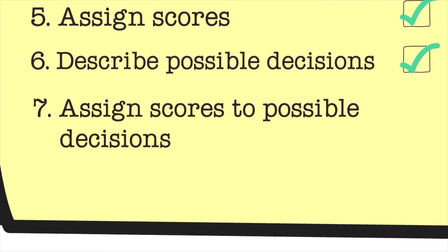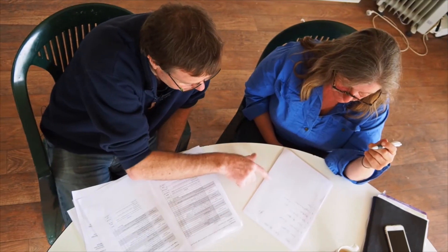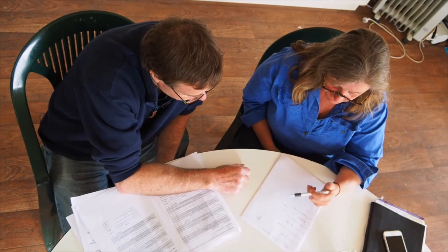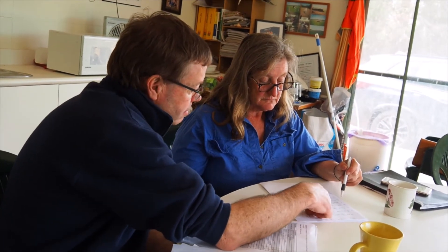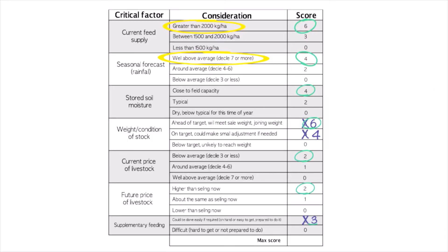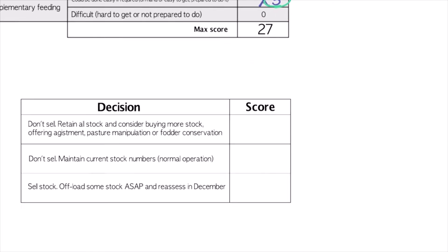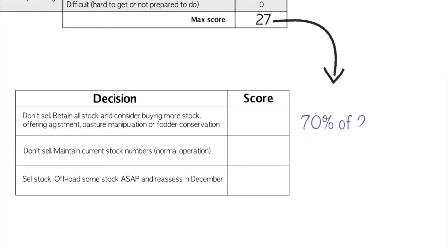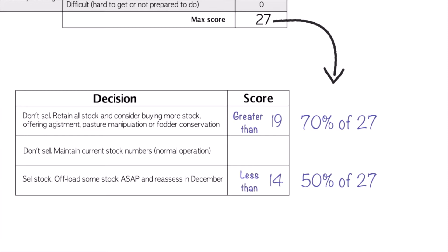Step seven is to assign scores to those different decisions. This is the trickiest part because these values are heavily influenced by the amount of risk you're prepared to take on, and as risk is a personal thing, there's no right answer. Add all the higher scores together to figure out the maximum — in this case it's 27. Set your first score at about 70% of this maximum value: 70% of 27 is 18.9, rounded to 19. Set your lowest score at 50%: 13.5 rounded to 14. That gives three ranges: greater than 19, less than 14, and a middle range of 14 to 19. If you're more conservative and don't want to take on much risk, that score may be higher; if you're more aggressive and willing to have a go, it might be lower.